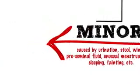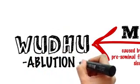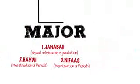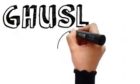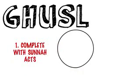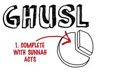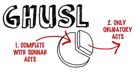To achieve tahara from the minor impurity you only need to renew your wudu (ablution), whereas in the case of major impurity you need to take a ghusl. Ghusl can be taken in two ways: a complete ghusl with all the Sunnahs of the Prophet, and a partial or sufficient ghusl which means only doing what is obligatory to free yourself from the ritual impurity.